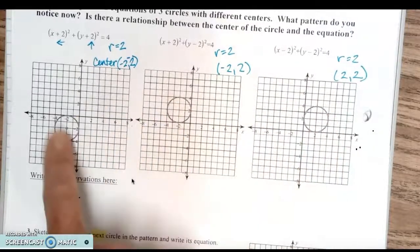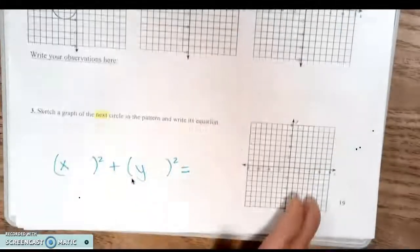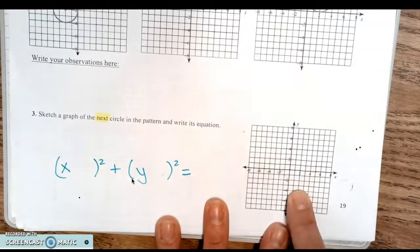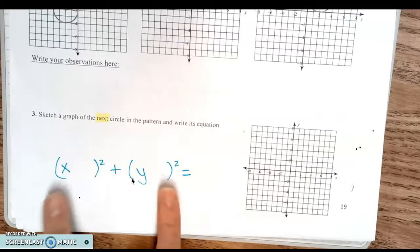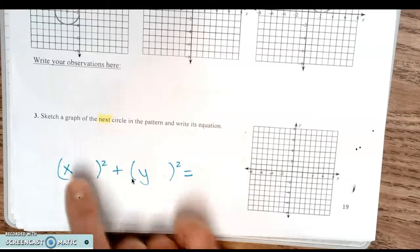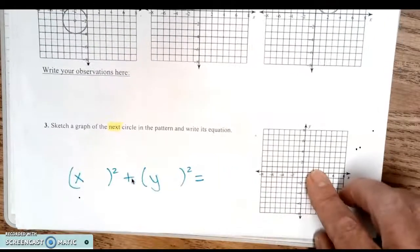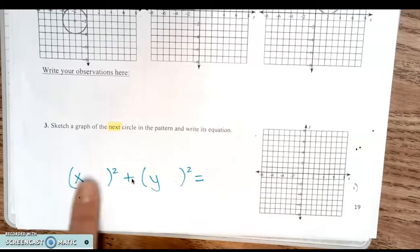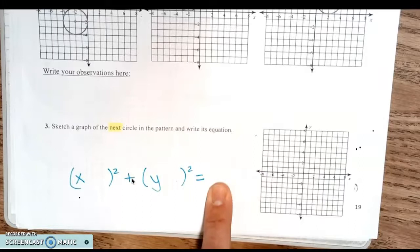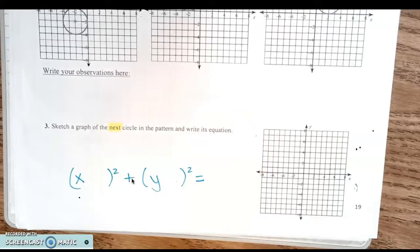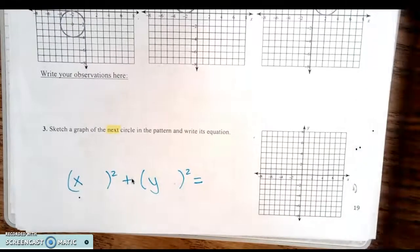We have circles in quadrants 1, 2, and 3 — the missing one goes in quadrant 4. Go two right and two down to place your center, then go two units in all four directions and draw your smooth circle. For the equation: with center (2, -2), what goes in the parentheses? x minus 2, y plus 2, and the right side equals 4 — you take the radius of 2 and square it. Any questions on number 3?